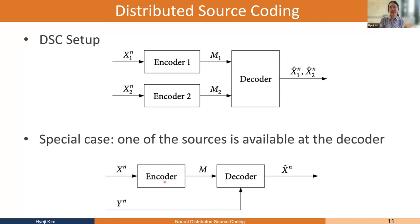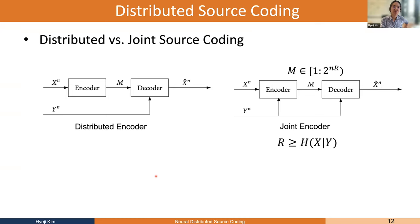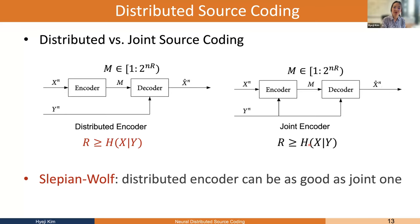With that in mind, I'm showing two figures: the distributed setup just explained, and another setup where the side information Y is available to both encoder and decoder. In the joint setting, the encoder needs a rate of H(X|Y), since it has Y as well. If X and Y are highly correlated, the required rate is lower. And Slepian-Wolf shows that the distributed encoder is just as good as the joint one: even without Y at the encoder, as long as the rate exceeds H(X|Y), we can achieve lossless compression.